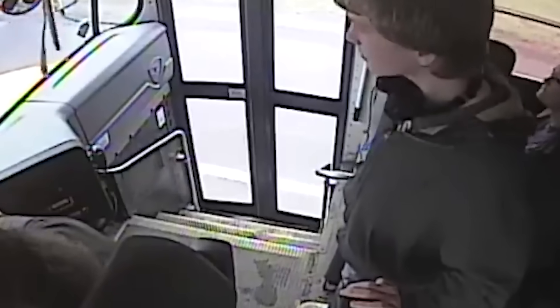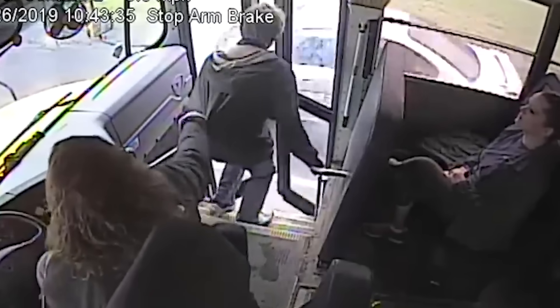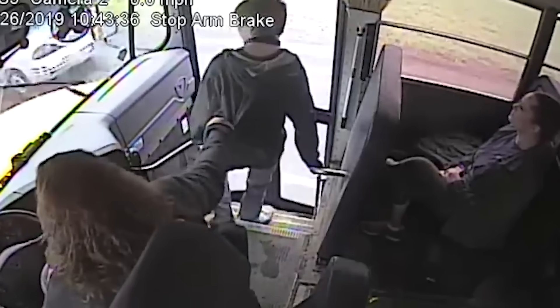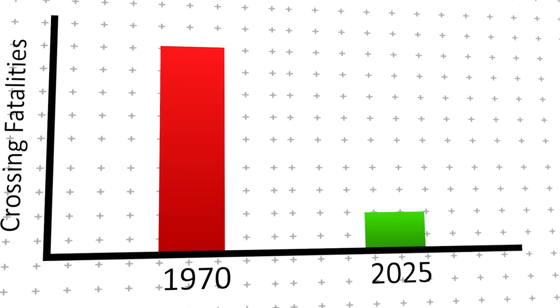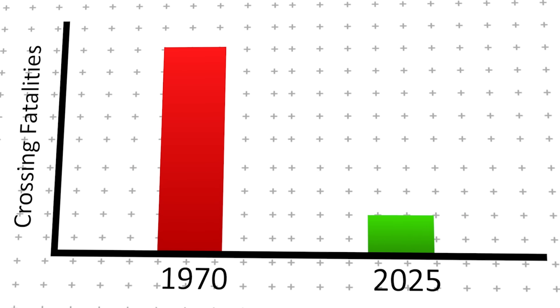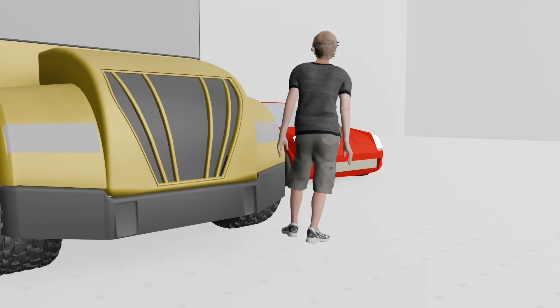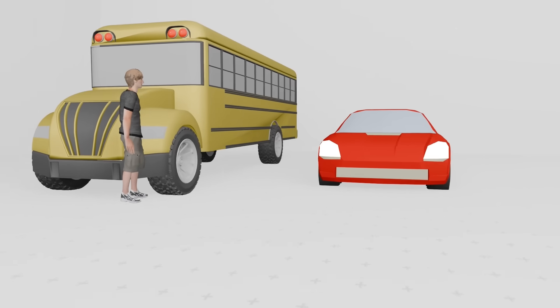But even with all these safety improvements, there was still one major risk that engineers couldn't control. The actions of other drivers. One of the most dangerous moments for students isn't inside the bus. It's outside. Historically, many school bus-related fatalities happened when children were hit by passing cars while crossing the street. Early school buses had no built-in traffic control systems, meaning students had to rely on drivers stopping voluntarily.